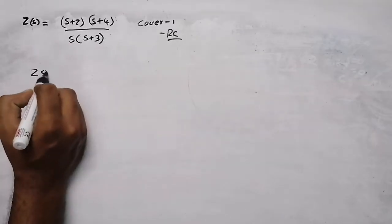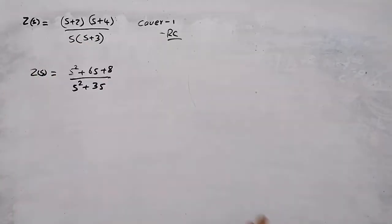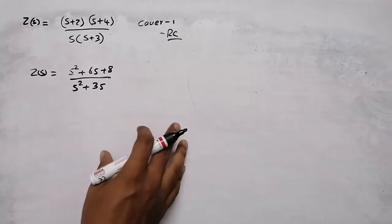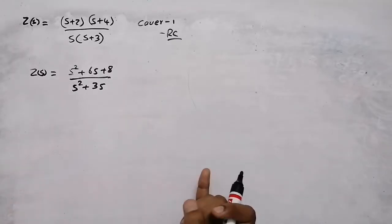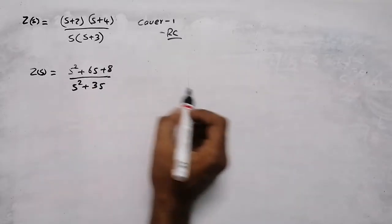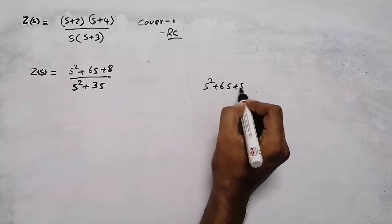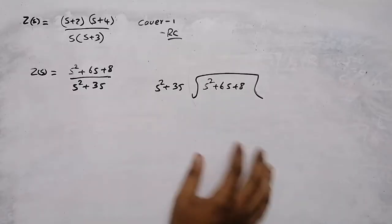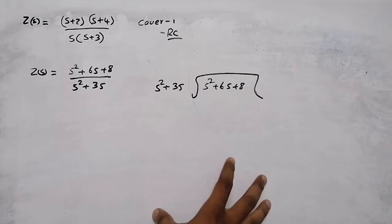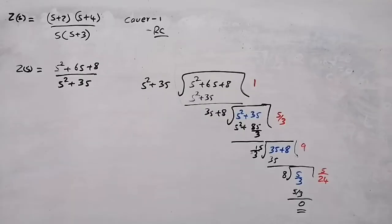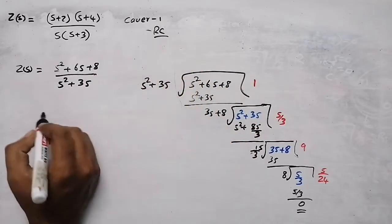Now open the brackets and multiply. I discussed everything in the previous video, so if you are watching this for the first time, please watch the previous video where I discussed RL and LC circuits. After simplifying, do the long division. The numerator is s² + 6s + 8, divided by the denominator s² + 3s. If you don't know how to do long division, watch the previous videos — the link is in the description.